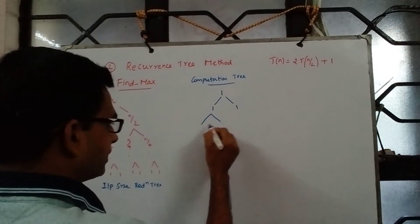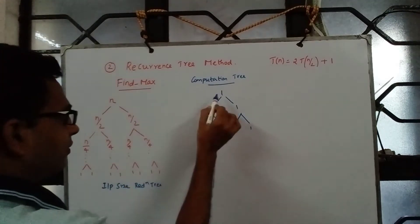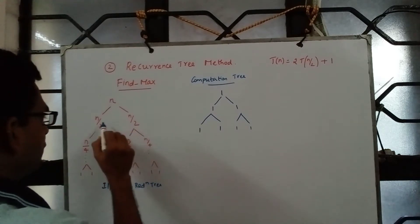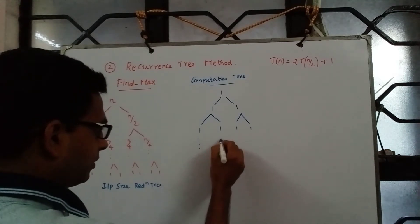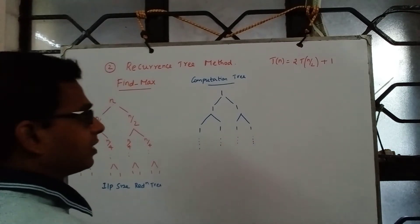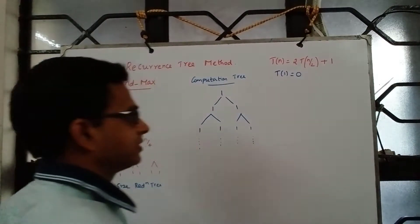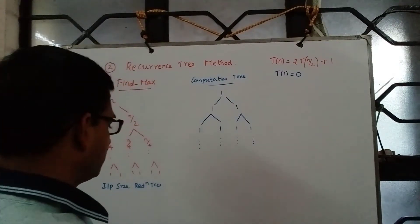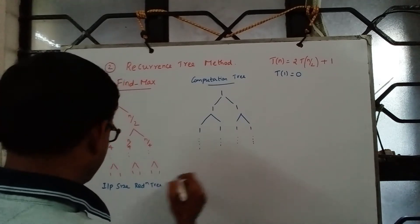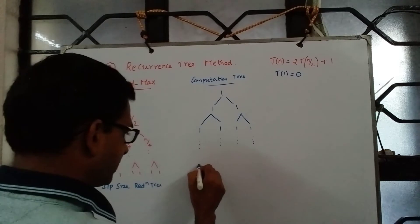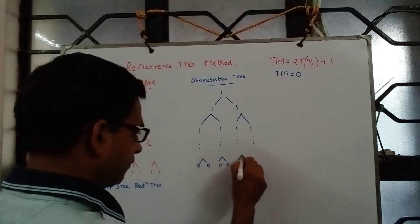Recursively, at each level we incur 1 comparison for each node at that level. When the problem size becomes 1, we do not need to incur any comparison to return maximum. So when the problem size is 2 we incur 1 comparison, but at the last level when the problem size becomes 1, the number of comparisons is 0 for each of them.